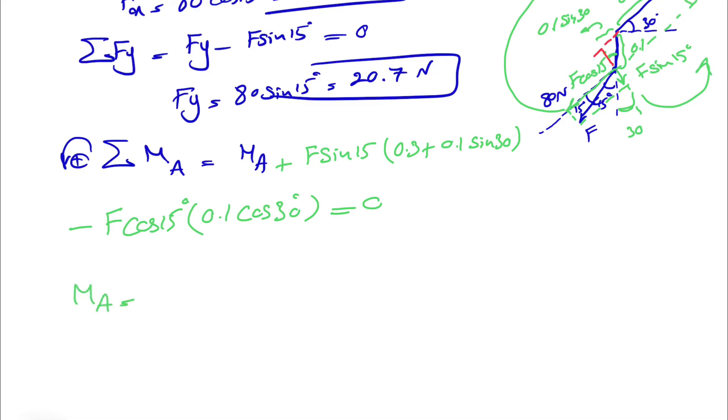So our MA will be F sine of 15, which is 20.7 times 0.3 plus sine of 30 is 0.5. So 0.3 plus 0.005. Oh, actually this one will be negative.